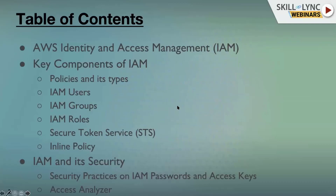This is the content we are planning to cover today in Identity and Access Management. We'll start with understanding what IAM is specific to AWS, then go one step deeper into the key components present in IAM. We'll walk through what a policy looks like, how to write a policy, and how to apply it to a user, group, or role. There are also advanced concepts like Secure Token Service and inline policies, which help give specific granular-level access.